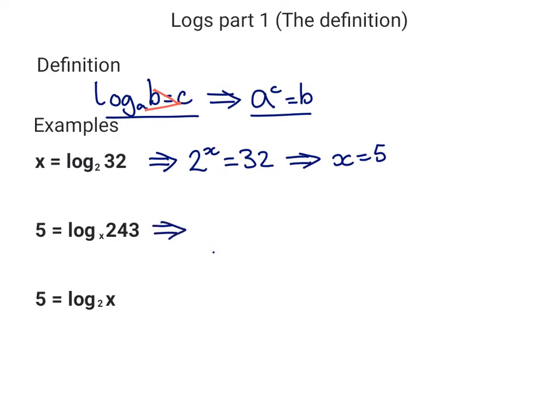If we look at the next question, by the definition we get X to the power of 5 equals 243. So what we're asking ourselves is, what number raised to itself five times equals 243? We've just seen above that 2 to the power of 5 is 32. Well if you actually do 3 to the power of 5, we get 3, 9, 27, 81, 243. So X must be 3.